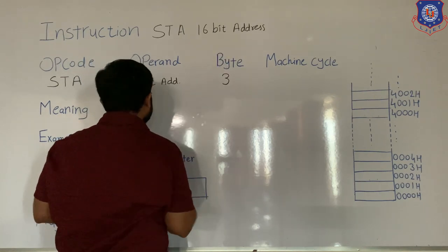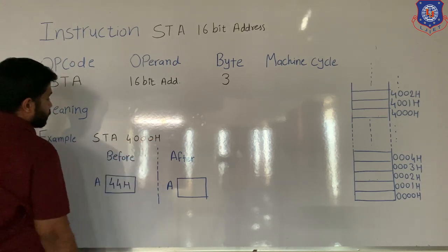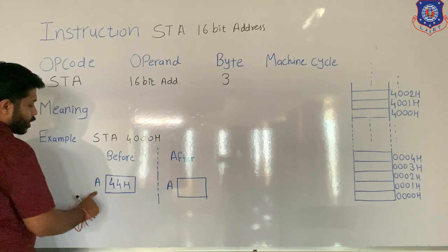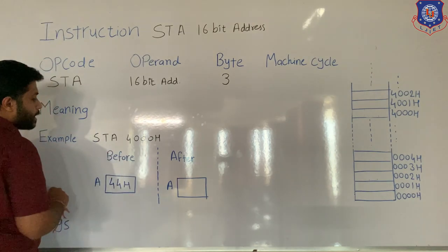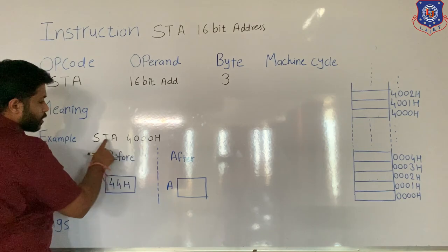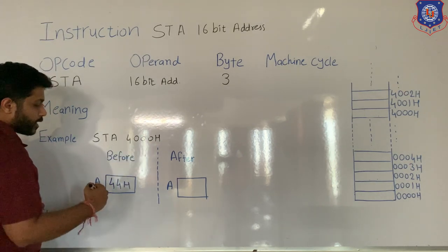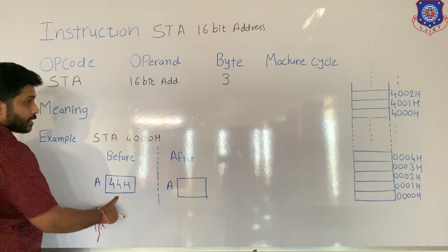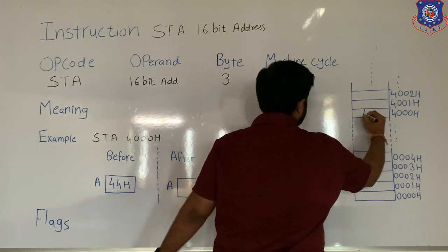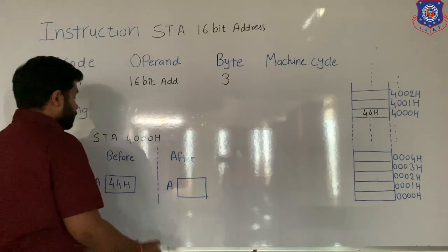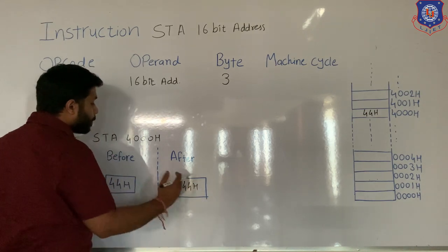Let's see one example: STA 4000H. Before execution, in the accumulator, 8-bit data 44H is present. STA 4000H means store data from accumulator to memory location 4000H. When this instruction is executed, the data in the accumulator is transferred to the 4000H memory location, so 44H will be stored there. The data is always copied, so after execution the accumulator data will remain — a copy stays.